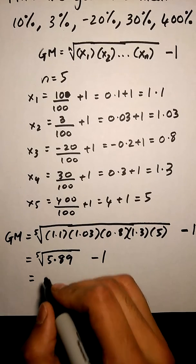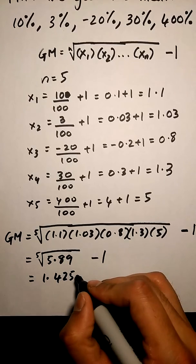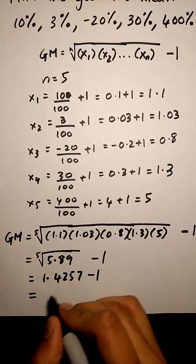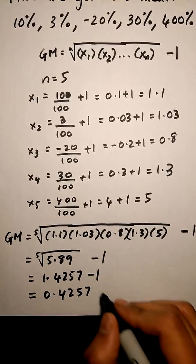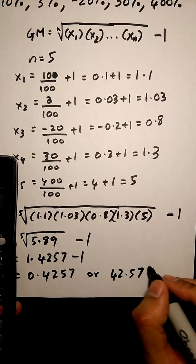That is 1.4257 minus 1, which is equal to 0.4257 or 42.57%.